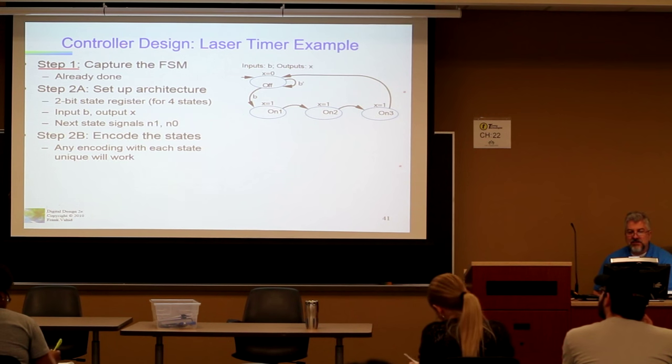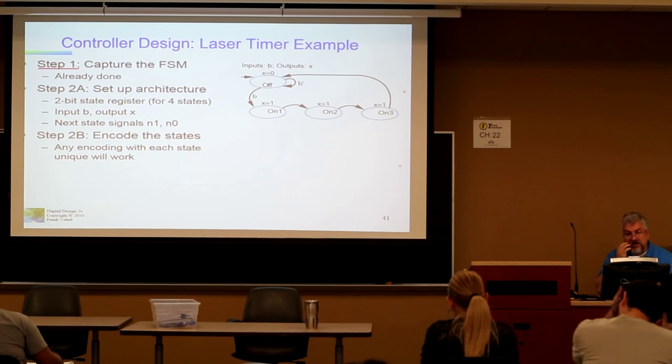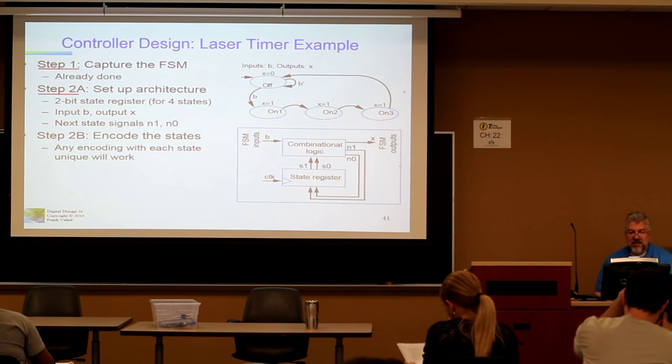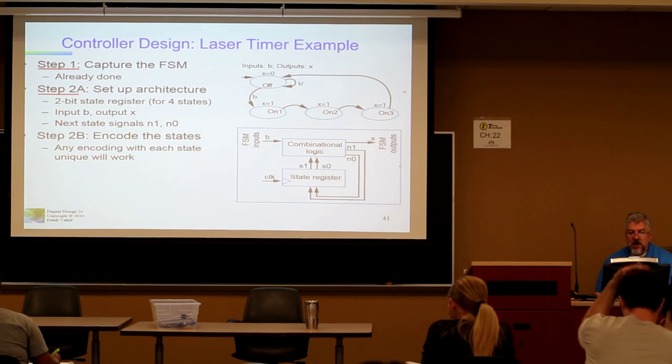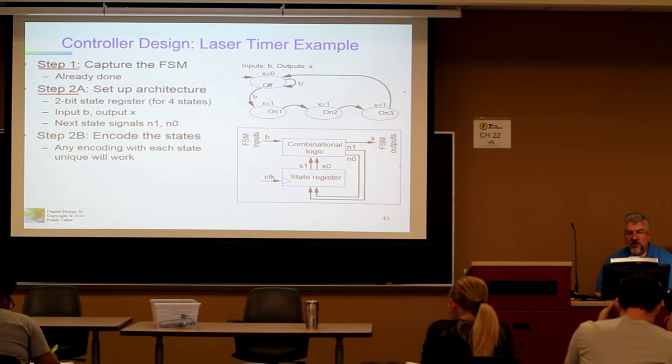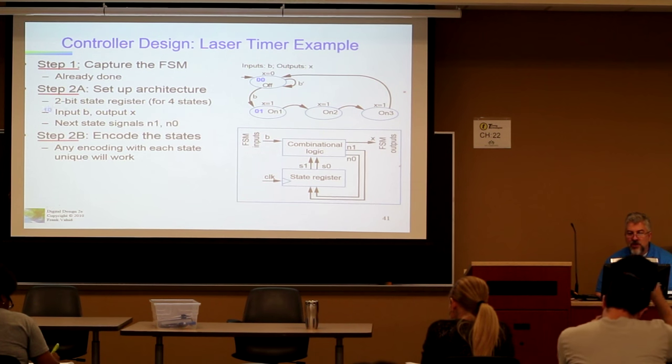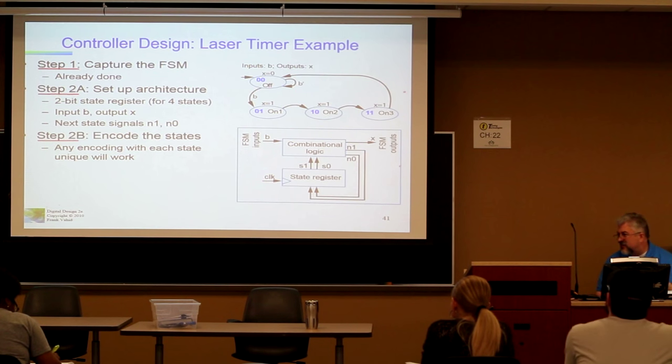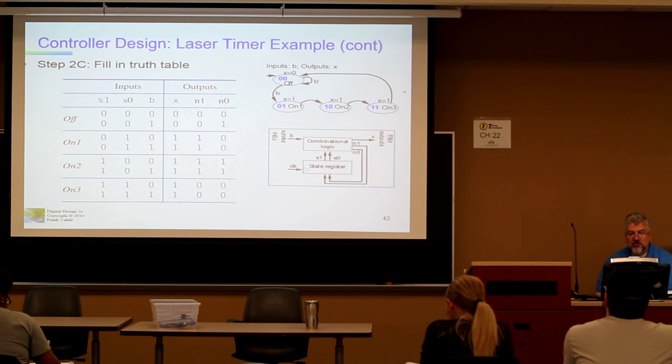Using K-maps to minimize the combinational logic. Just for grins, page 40, all right? Of the notes. This is in the book. You know, the book. The thing you were supposed to, I said, you know, the book. And it's amazing. I had like, like 20 people in here say, oh yeah. As if you didn't know what the book was. All right. Step one. Capture the finite state machine. Already did. Or did. We did it at it. All right? The next is set up the architecture.